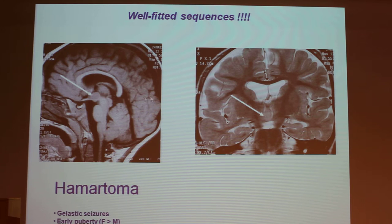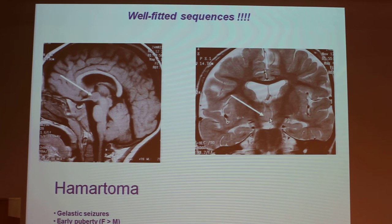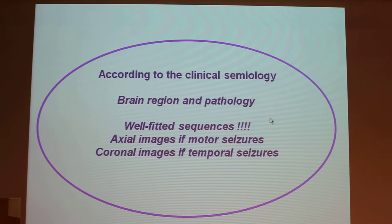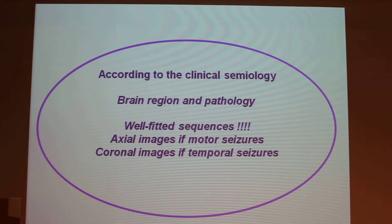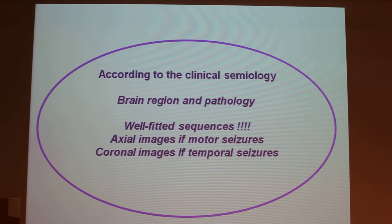For example, for a hamartoma, you have to know what you are searching for because it is very difficult to see, and you have to perform a coronal T2. According to the clinical semiology, you have to choose the appropriate sequence — axial images for motor seizures, and coronal images for temporal seizures. It is very, very important to know that.